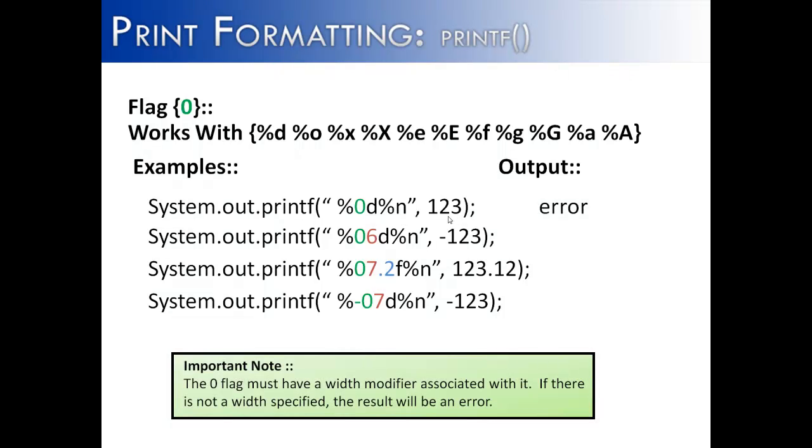Now, when we try this the first time, we notice that it produces an error. The reason is that you must specify a width with the 0 flag. Otherwise, you will get an error because it's only going to print 1, 2, 3, and there wouldn't be any space for leading zeros.